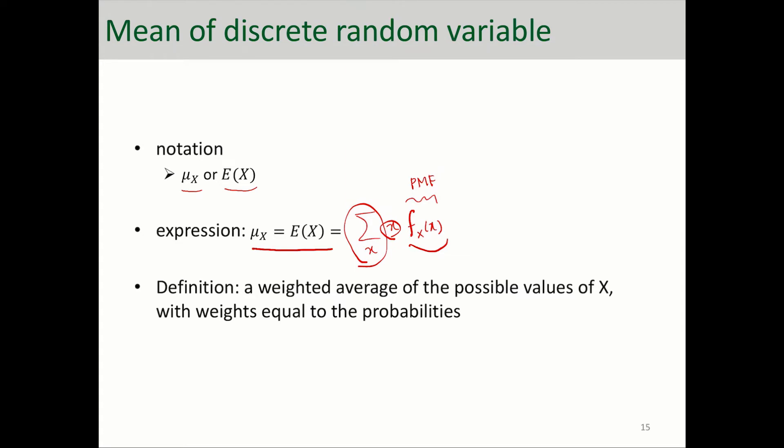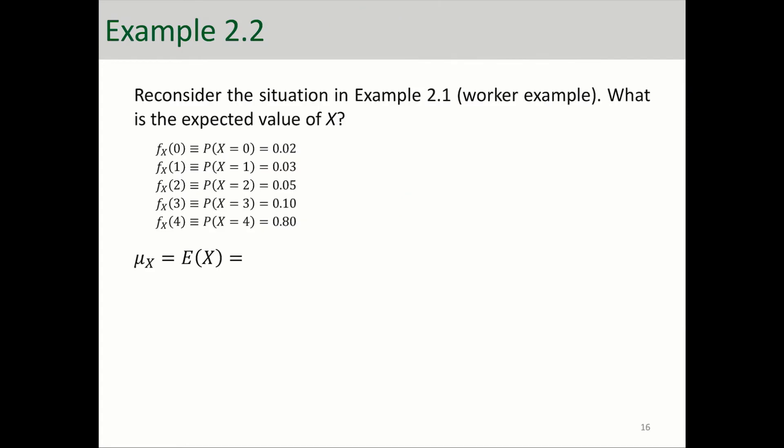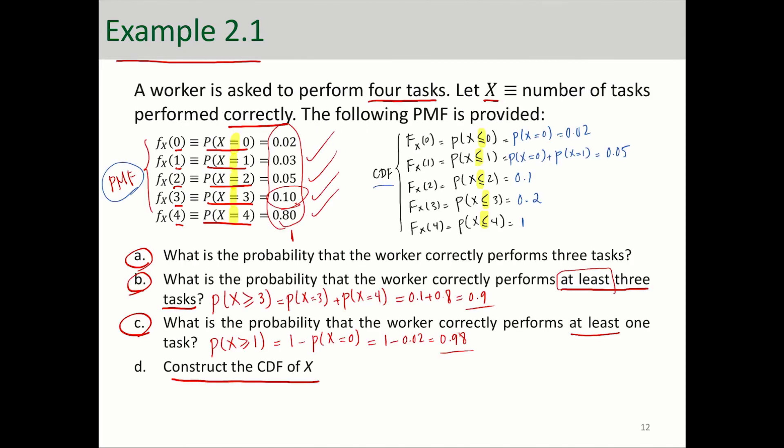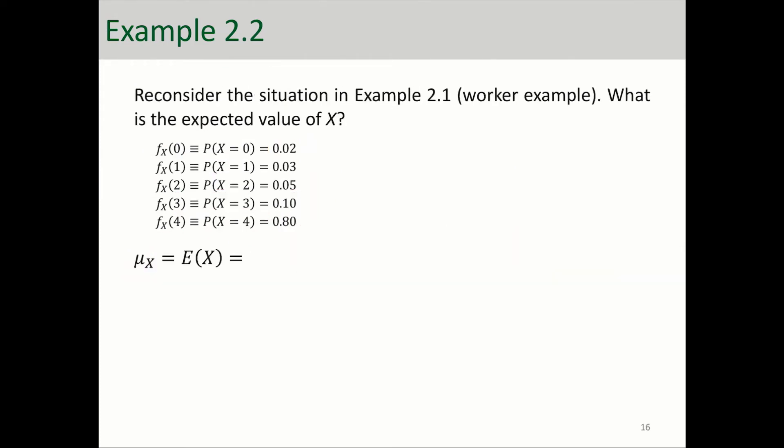So let's look at one example here to make this more clear. Here we're reconsidering the problem that we had before. If you go a few slides back, this was the problem: a worker is asked to perform four tasks and X is the number of tasks performed correctly. The PMF function is given to us and the possible values of X is 0 through 4. So how do we calculate the expected value of this random variable?